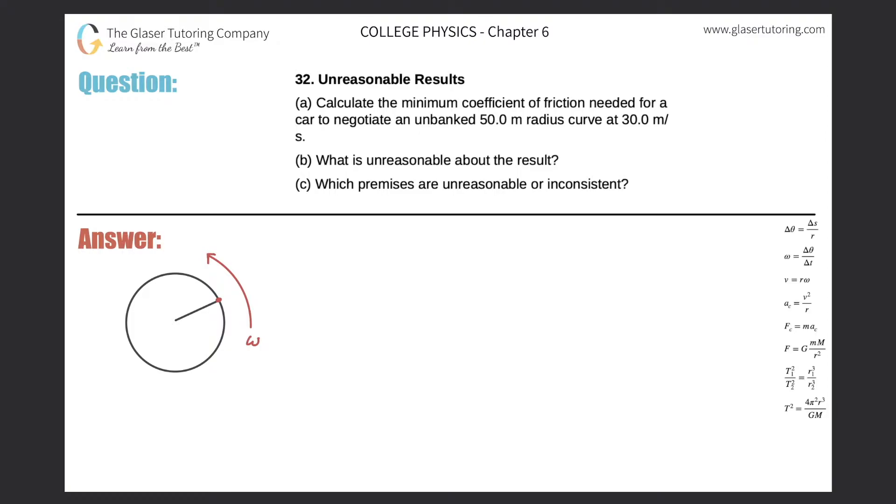Number 32, unreasonable results. Letter A: Calculate the minimum coefficient of friction needed for a car to negotiate an unbanked 50 meter radius curve at 30 meters per second. Here's our little diagram. Here's the vehicle going around some unbanked track. We're taking an aerial view here and it has some angular velocity.